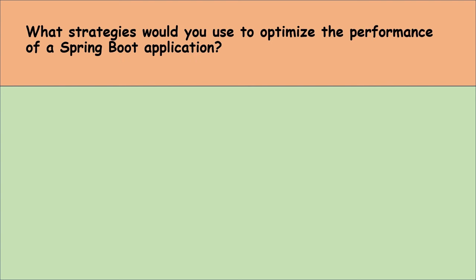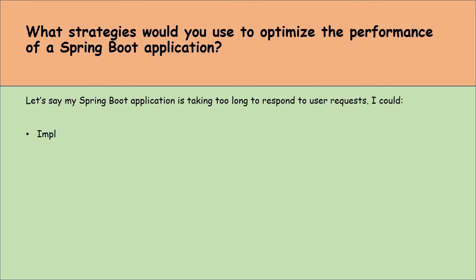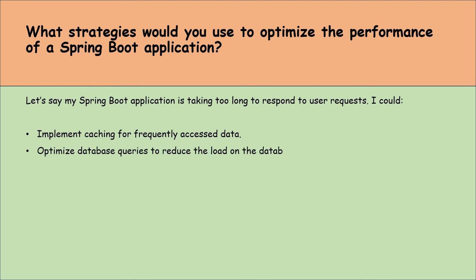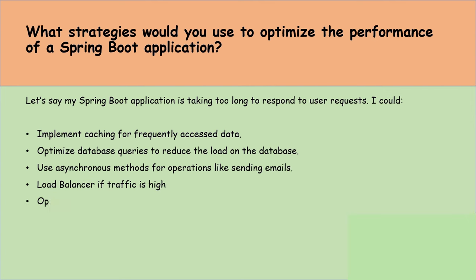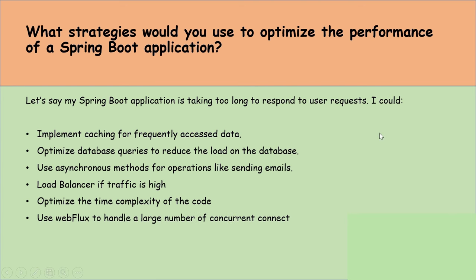What strategies would you use to optimize the performance of a Spring Boot application? If my Spring Boot application is taking too long to respond to user requests, I could implement caching for frequently accessed data, optimize database queries to reduce load on the database, use asynchronous methods for operations like sending emails, use a load balancer if traffic is high, optimize the time complexity of the code, and use WebFlux to handle a large number of concurrent connections.